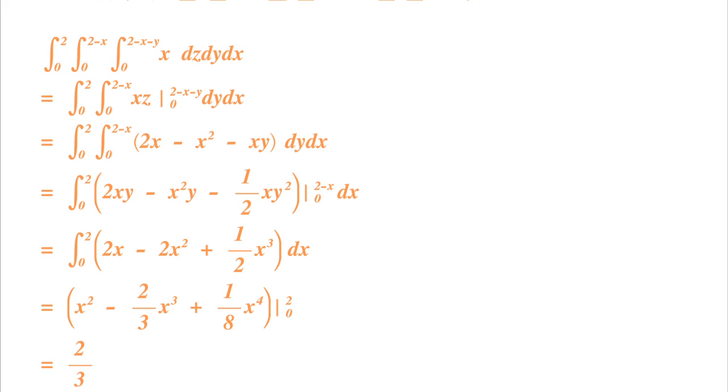So we've set up our triple integral there. First of all, we're going to do the inner integral. That is with respect to z, which simply will bring z into our x. And that goes from 0 to 2 minus x minus y. We see the solution there once we plug in those values.